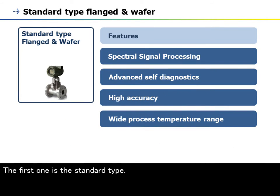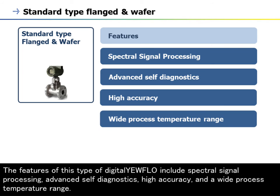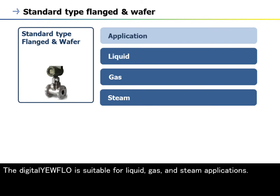The first one is the Standard Type. The features of this type include spectral signal processing, advanced self-diagnostics, high accuracy, and a wide process temperature range. The Digital Yewflow Standard Type is suitable for liquid, gas, and steam applications.